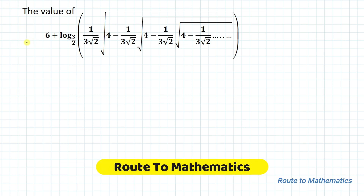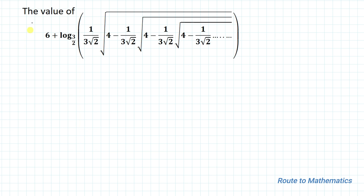Hello everyone, welcome to Root 2 Mathematics. In this video we are going to solve an interesting logarithm question. The given question is: find the value of 6 plus log base 3/2 of (1 divided by 3√2) times the square root of 4 minus (1 divided by 3√2) times the square root of 4 minus (1 divided by 3√2) continuing infinitely. Without any delay, let's start the solution. Let's take the given expression as x.